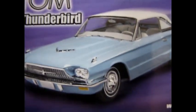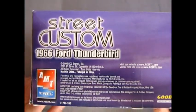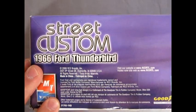Then if we turn it over, you just get a basic view of the side of the box. On this side, we've got the 66 Street Custom.